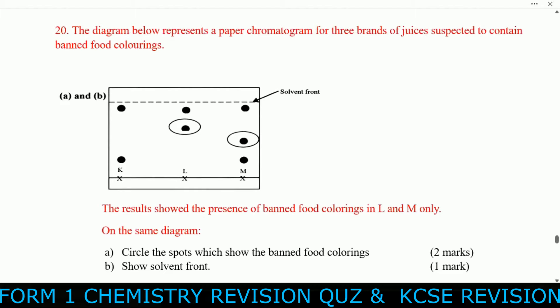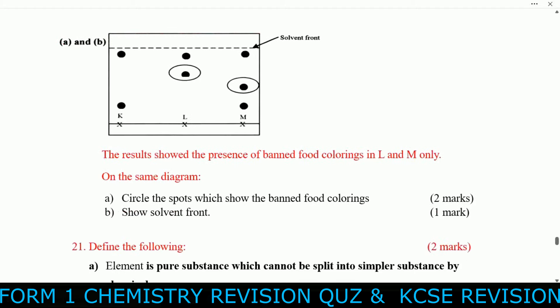Question twenty: A paper chromatogram shows three brands of juices — substances K, L, and M — suspected to contain banned food coloring. The solvent front is identified. Results showed the presence of banned food coloring in L and M. The spots showing the banned food coloring are circled on the diagram, and the solvent front is identified.